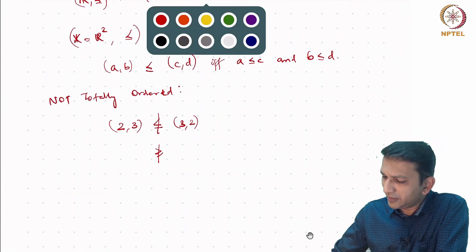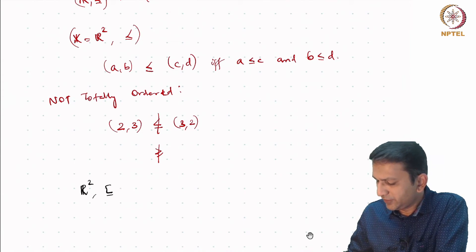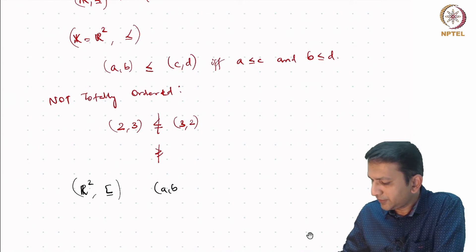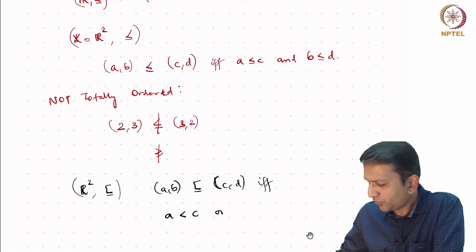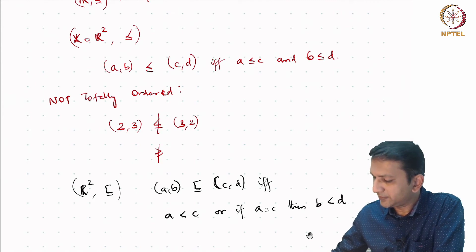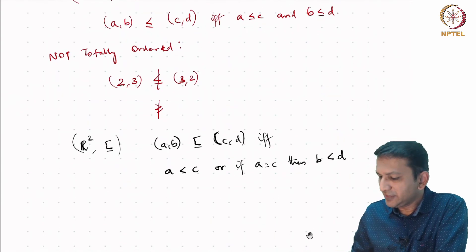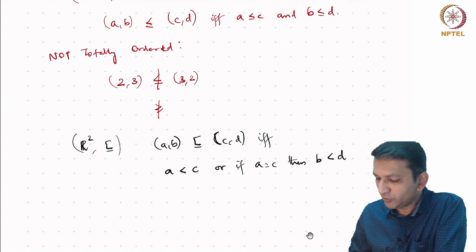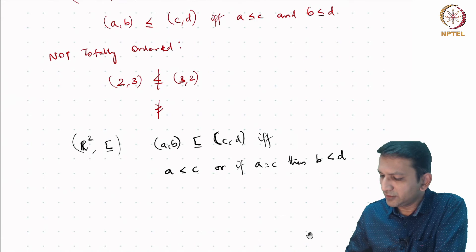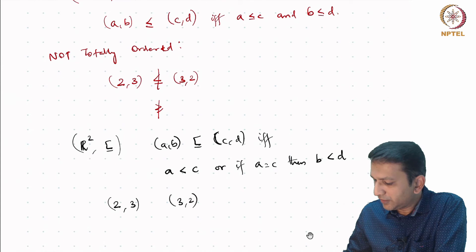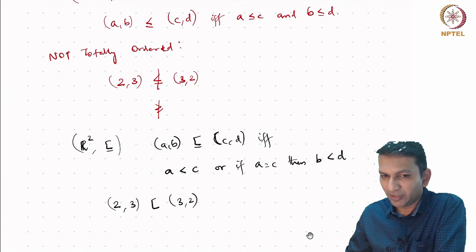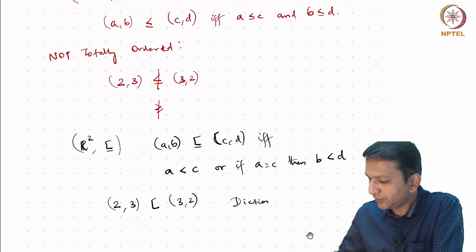Can we come up with another relation which will help? Consider the lexicographic ordering on R²: (a,b) is related to (c,d) if and only if either a < c, or if a = c then b < d. Using this relation, it can be easily verified that this is not only a partial order — it is also a total order, meaning any two elements can be related. For instance, for (2,3) and (3,2), since 2 < 3 we immediately say the first pair is smaller. This ordering on R² is known as the dictionary or lexicographic order.